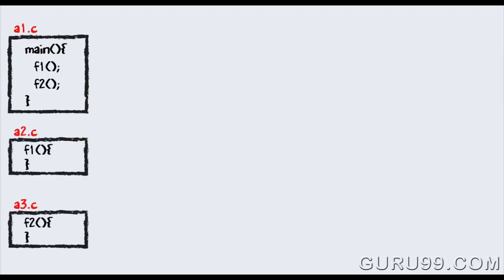Suppose in the main, you have called two functions, F1 and F2. The main function is stored in file A1.C. Function F1 is stored in file A2.C. Function F2 is stored in file A3.C.